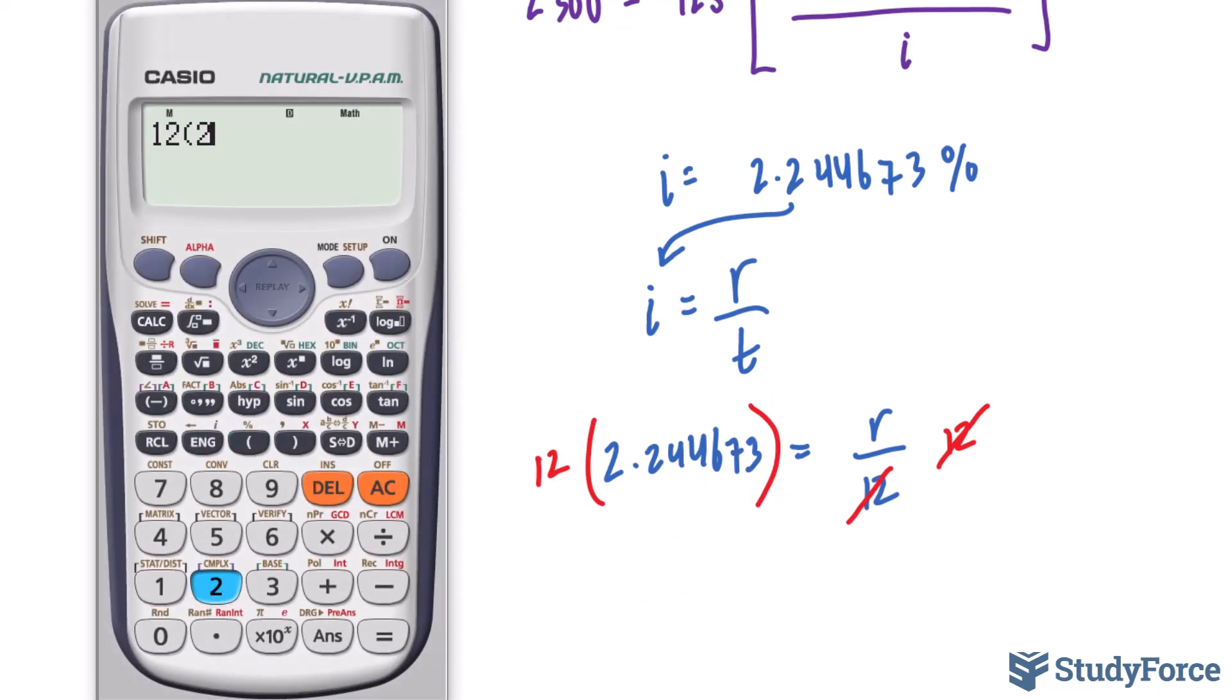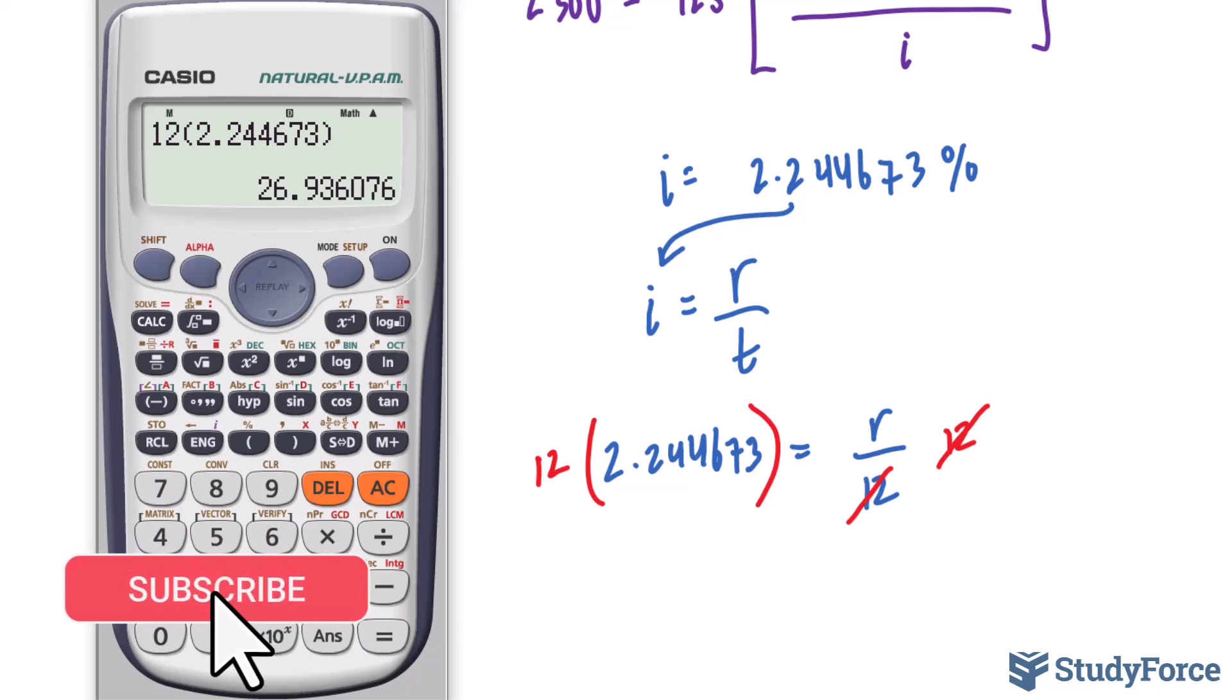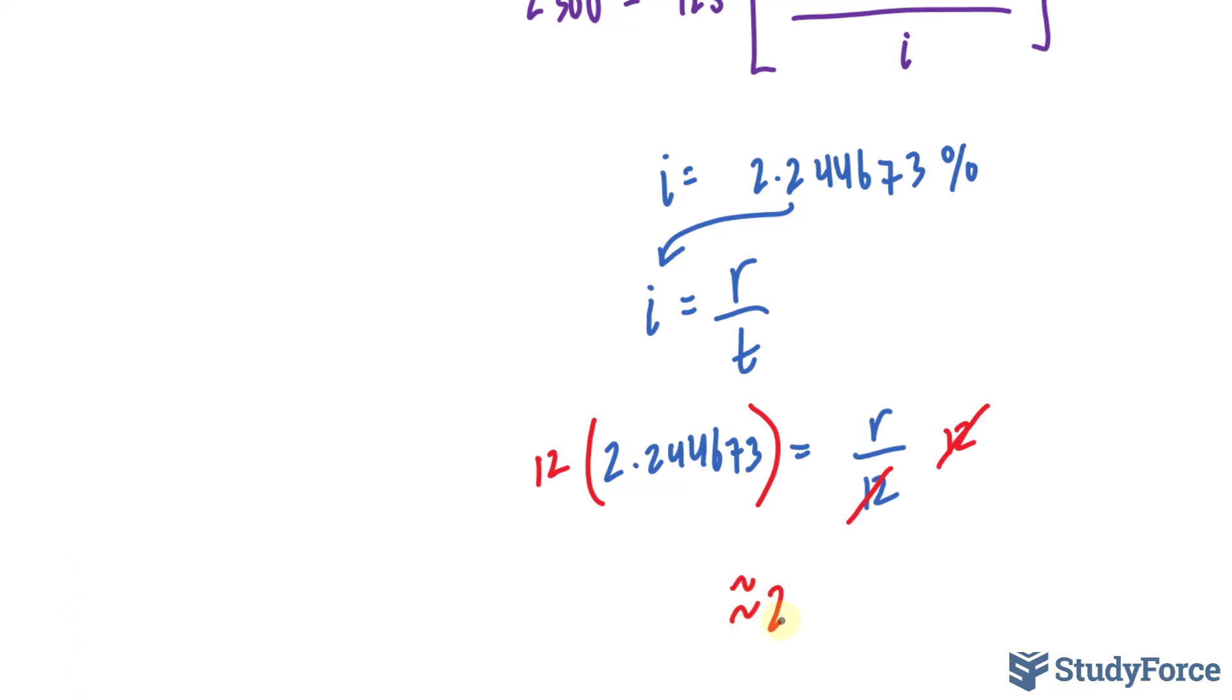Using our calculator, 12 times 2.244673. That means on this television, you are paying 26.93% per year compounded monthly.